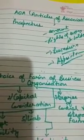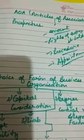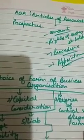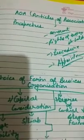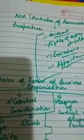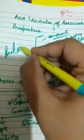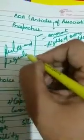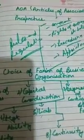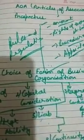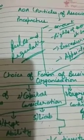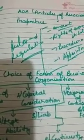AOA also contains the duties, powers, and remuneration of the directors, procedure for the declaration and payment of dividend, procedure regarding winding up of the company, and procedure regarding keeping of books of accounts and their common seal. The main definition of AOA is that it contains the rules and regulations of the company and clarifies the duties, powers, and rights of the directors as well as the members of the company.